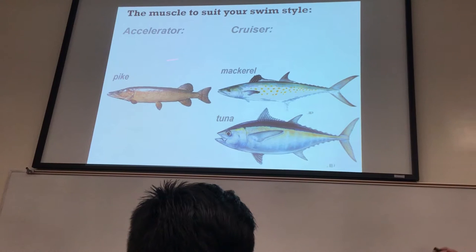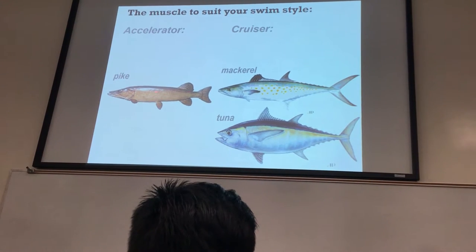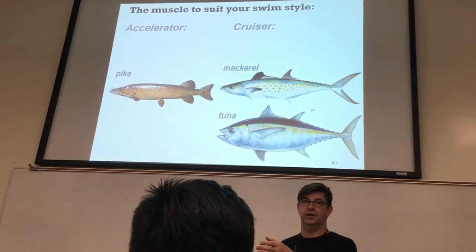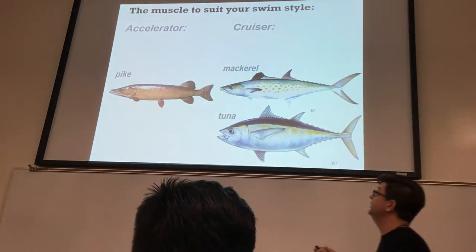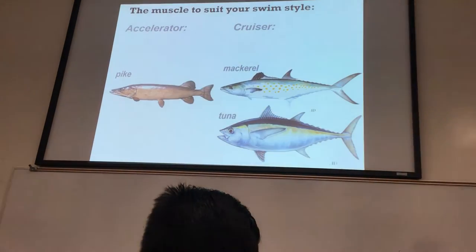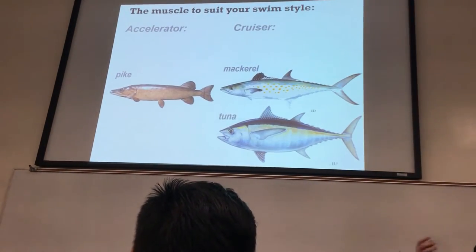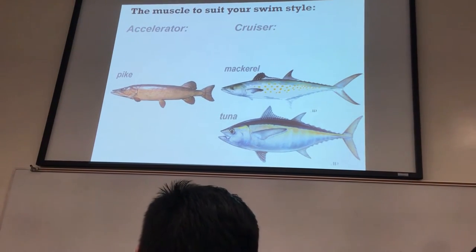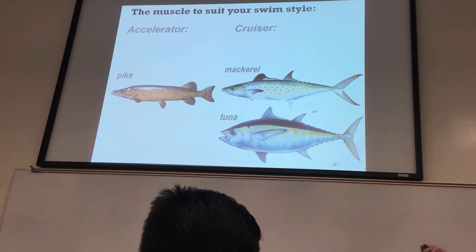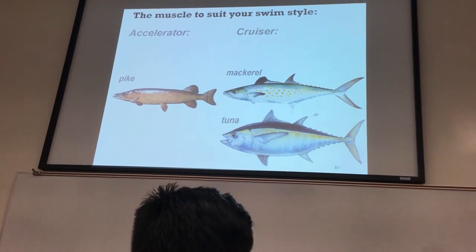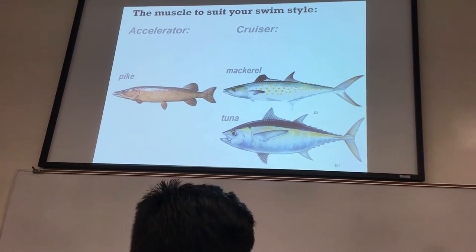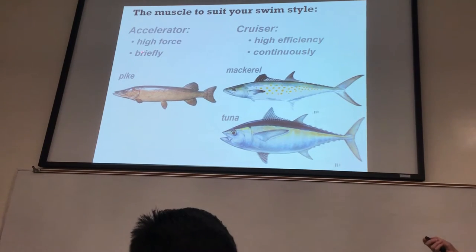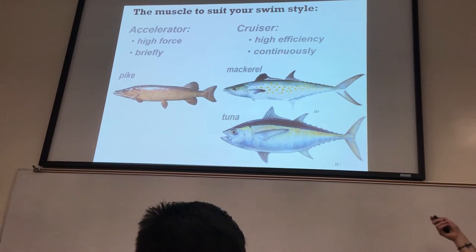If we look at two different types of fish — the pike, which is the accelerator, and then our cruisers — pike kind of lie in wait when they want to attack a prey item. They're an accelerator, so they really can whip their body to generate a tremendous amount of force to move very rapidly after a prey item. A lot of white muscle. Whereas our cruisers, the mackerel and the tuna, they have quite a bit of red muscle. These accelerators can generate high force for a very brief amount of time, while cruisers are highly efficient and continuous.